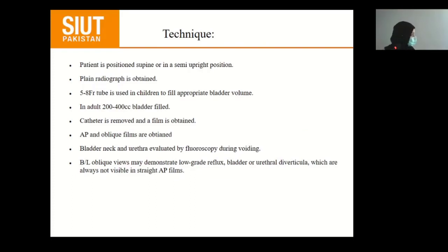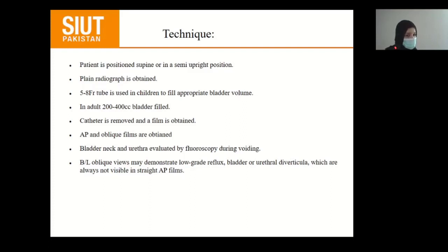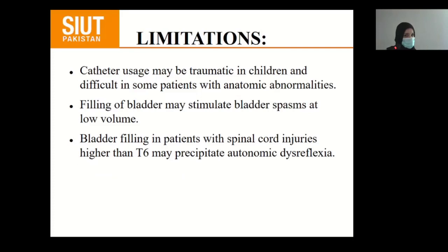The voiding cystourethrogram is performed to evaluate the anatomy and physiology of the bladder and urethra. It provides valuable information regarding the posterior urethra in the pediatric population and is used to demonstrate vesicoureteral reflux, stricture or functional bladder outflow obstruction, and evaluation of the urethra in males. The patient is positioned supine or semi-upright. A plain radiograph is obtained; 5 to 8 Fr catheter is used in children to fill the appropriate bladder volume; in adults, 200–400 cc is used depending on bladder capacity.